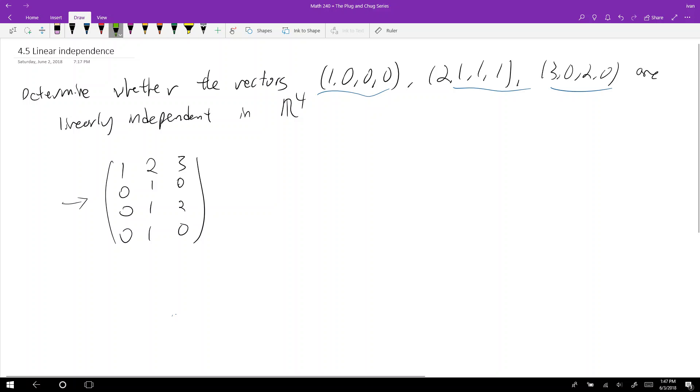So what we're actually doing is that we're sort of actually trying to solve a system of equations where we're sort of trying to solve like c1 times (1,0,0,0) plus c2 times (2,1,1,1) equals (3,0,2,0). We want to see if a c1 and a c2 exists. If they do exist, then they're not linearly independent because then (3,0,2,0) is dependent on some combination of (1,0,0,0) and (2,1,1,1).